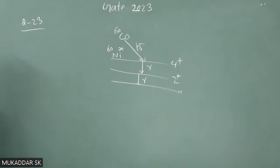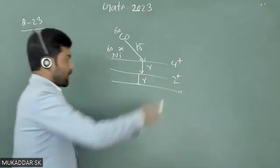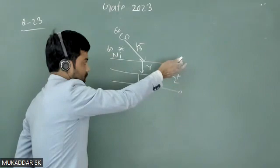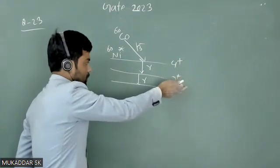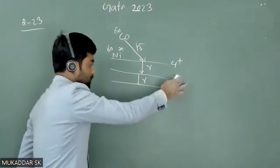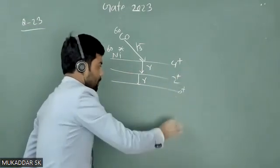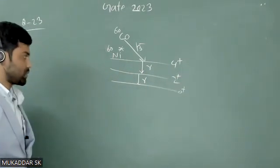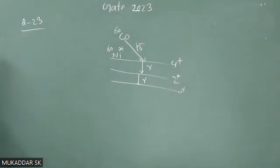So we have to investigate what kind of transition that transition from 4+ to 2+ is, and also 2+ to 0+ what kind of transition it is.